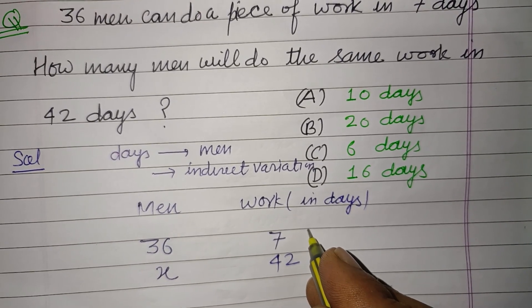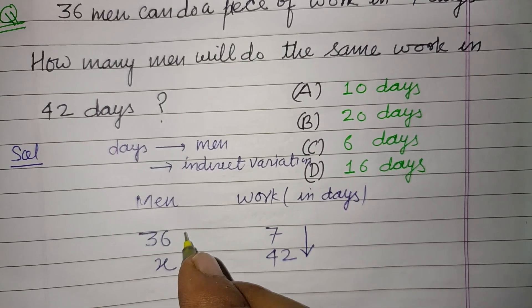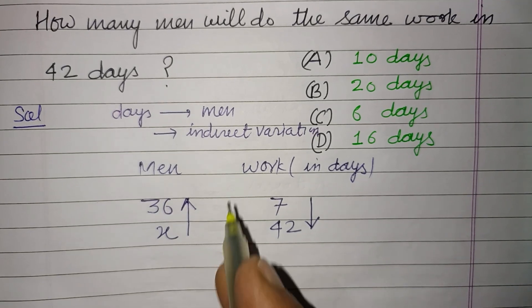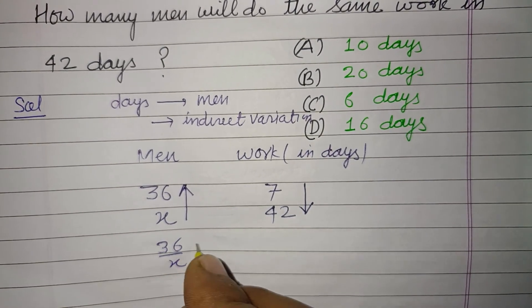Number of men decreases, so it is indirect relation. Using this, 36 over X equals 42 over 7.